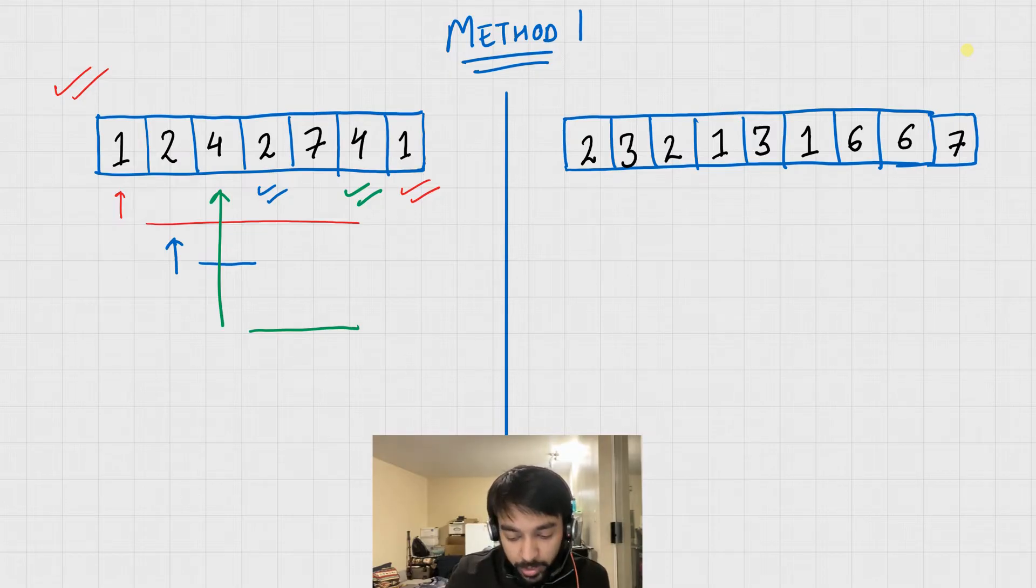Once you reach the fifth element, that is number 7, you scan the array from the beginning and you see that this element does not occur from the starting till the end. In this case your answer should be 7.